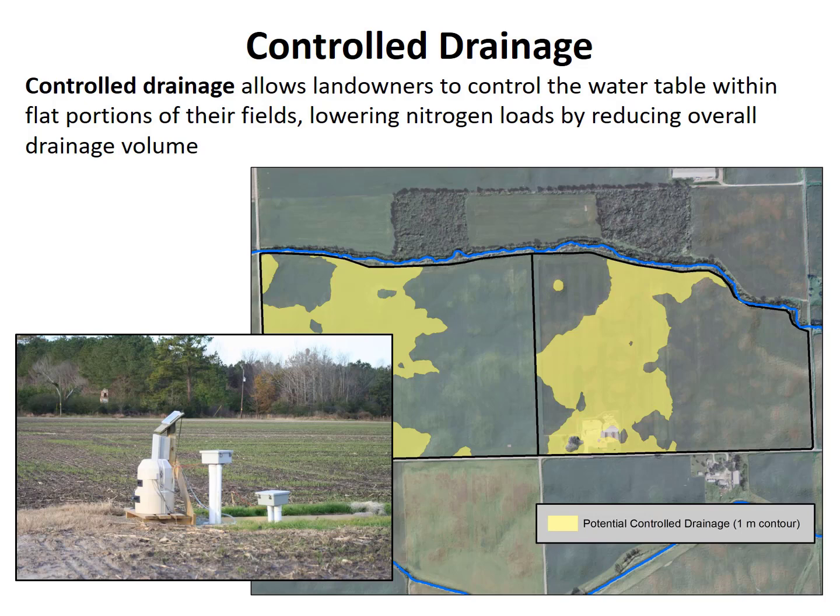One of these practices is controlled drainage, used on flat fields to change the water table depth at different times of the year. This practice is also sometimes called water table management, and it can reduce the volume of drainage and therefore nitrogen loads as well.